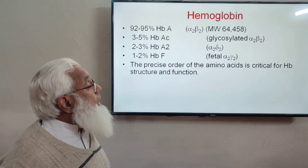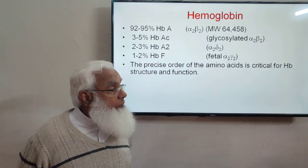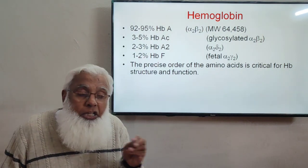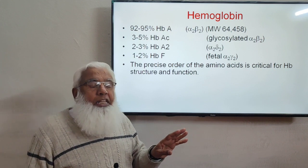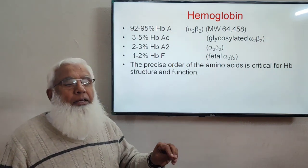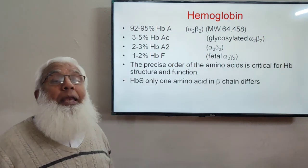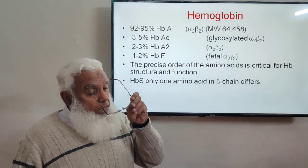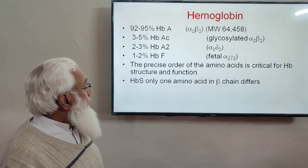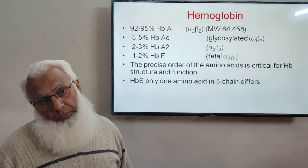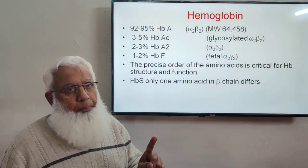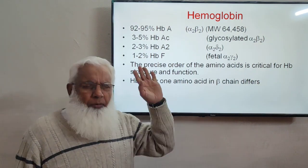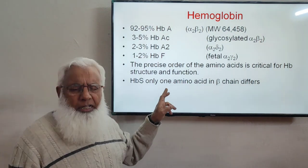Only a few changes in the amino acid sequence of a globin chain can result in drastic changes in hemoglobin function. For example, hemoglobin S is an abnormal hemoglobin present in sickle cell anemia. In hemoglobin S, only one amino acid in the beta chain differs — at position six, valine is substituted for glutamic acid. This single change results in grossly abnormal hemoglobin.